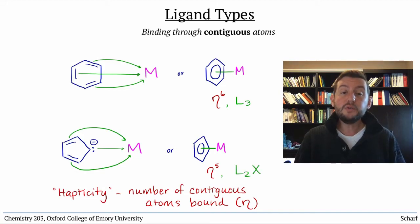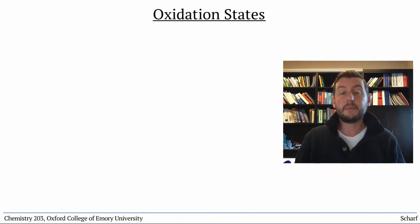We use the X and L notation to help us determine a very important property of transition metal complexes: the oxidation state of the metal ion.